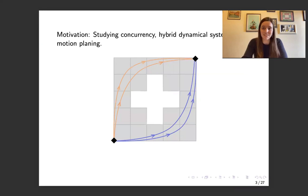And so that includes studying concurrency, hybrid dynamical systems and motion planning, and I'm going to focus on concurrency because this is the one I've read the most about and I am the most familiar with. And so concurrent computing is when you have multiple computations, also known as processes or threads that are executed concurrently, so during the same time or overlapping periods, instead of sequentially.